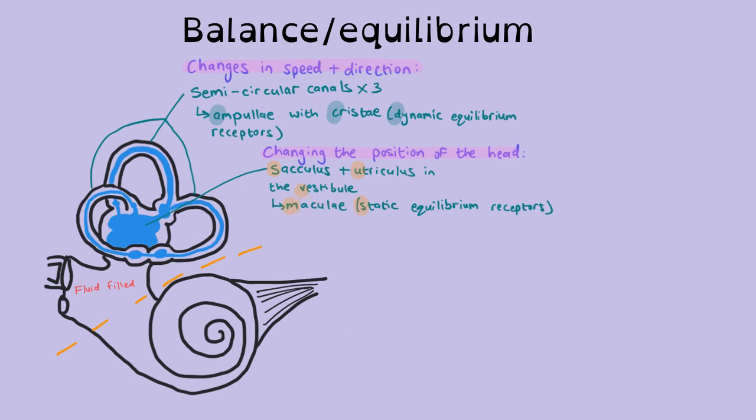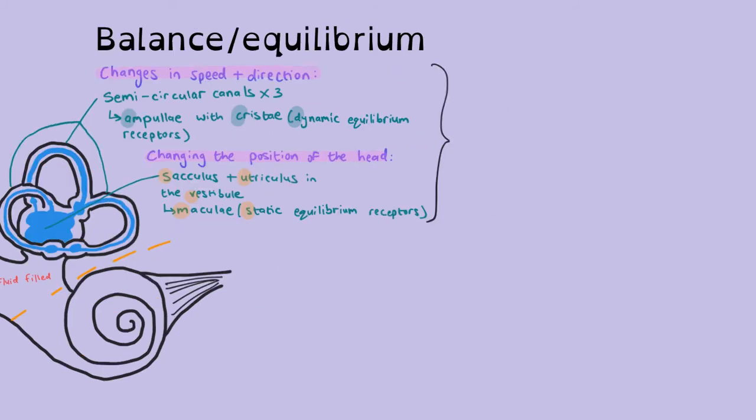And remember, anytime you have a receptor, the Christi or the maculae, their job is to convert the stimulus into a nerve impulse. So now you've got the background. You've got two different types of receptors, the maculae for your static equilibrium, where you only change the position of your head. And you know where those maculae are found, sacculus and utriculus in the vestibule. Or if you're changing speed and direction, you have the Christi, which are found in the ampouli at the base of the semicircular canals.